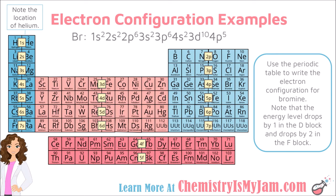For the electron configuration for bromine, you can see where this happens: 1S², 2S², 2P⁶, 3S², 3P⁶, 4S², 3D¹⁰. It takes 10 electrons to go all the way through the D block and the energy level dropped down to a 3. Coming out of the D block you go to 4P, and 5 electrons gets you to bromine.